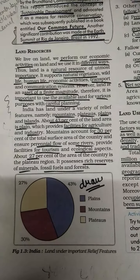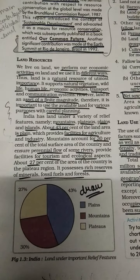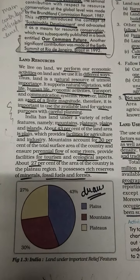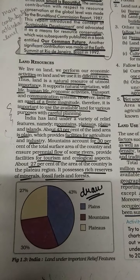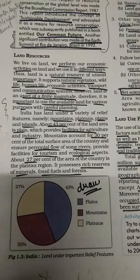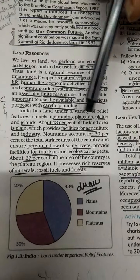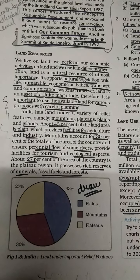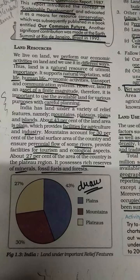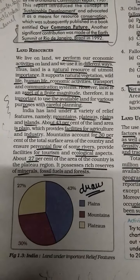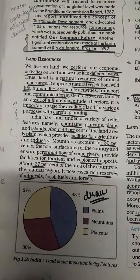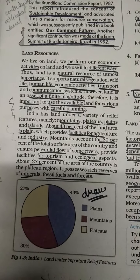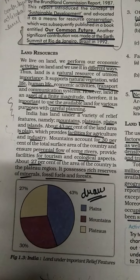Today we are going to start a new topic: land resources. We were discussing resources and development, and the first resource is land, on which we live and perform our economic activities. We use land in different ways. It is a very important natural resource that supports natural vegetation, wildlife, human life, economic activities, transport, and communication systems.